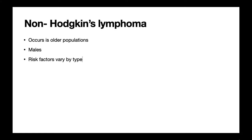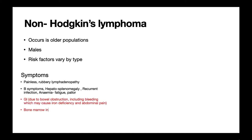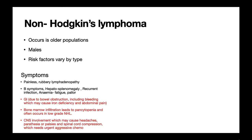Non-Hodgkin's lymphoma typically occurs more in the older population and is unlikely to be seen in patients younger than 50. It occurs more often in males, and risk factors vary by subtype. Symptoms are typically similar: painless rubbery lymphadenopathy — though the association with alcohol is not commonly seen. B symptoms such as fever, night sweats, and weight loss may also be present, along with organomegaly, anaemia, and low white cell counts.